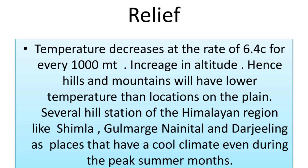The third factor is relief. Temperature decreases at the rate of 6.4 degrees Celsius for every 1000 metres increase in altitude; hence hills and mountains have lower temperatures than locations on the plain. Relief or altitude of a region therefore influences the climate of that area. Hill stations of the Himalayan regions like Shimla, Gulmarg, Nainital, and Darjeeling have cool climates even during peak summer. Similarly, Kodaikanal and Udhagamandalam (Ooty) have cooler climates compared to places near the coast.